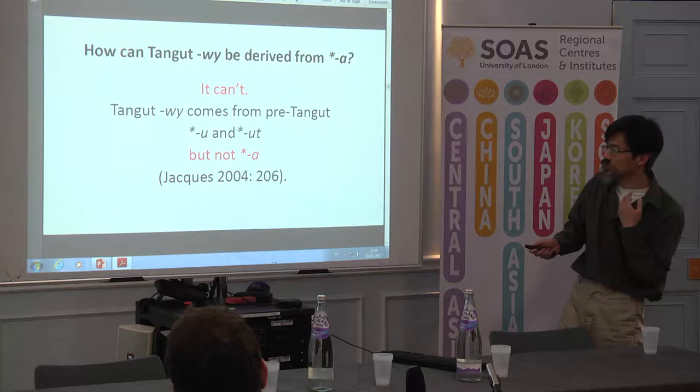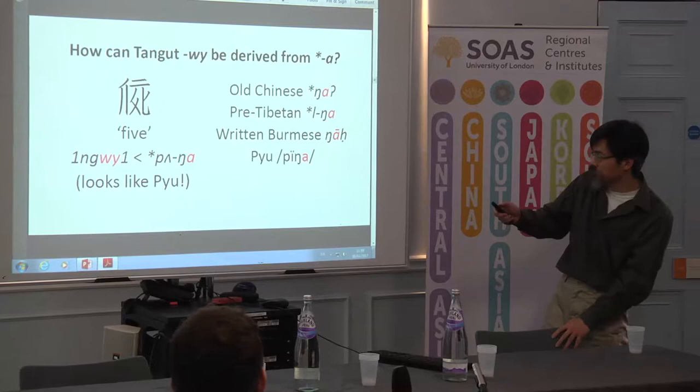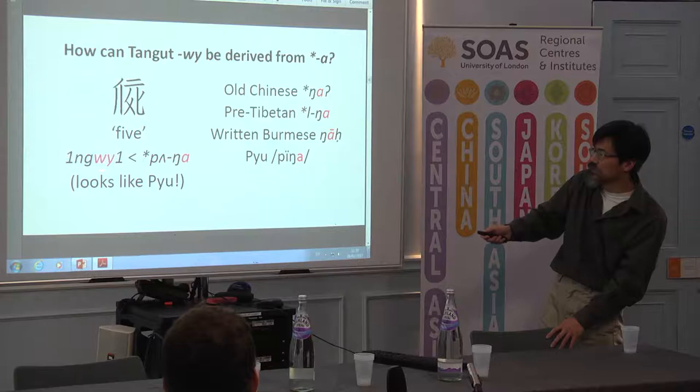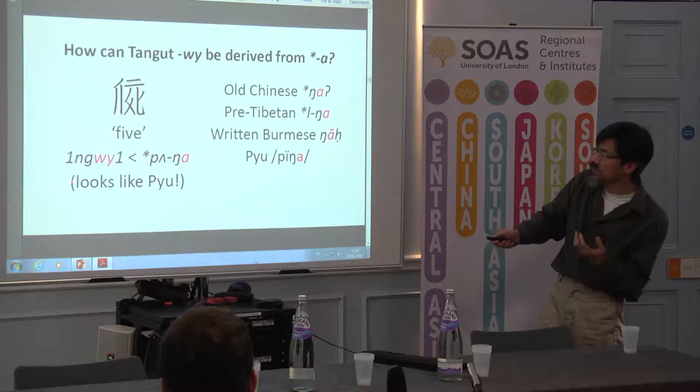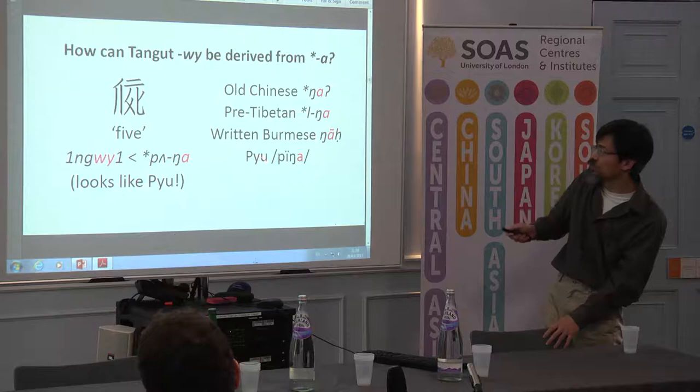Should I just give up on five and say it kind of looks like the other words — it has an nga like the other words — but the vowels simply make no sense at all, so it's just a complete coincidence that Tangut has this nga word totally unrelated to all these other words? Let's see if we have to.